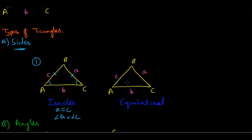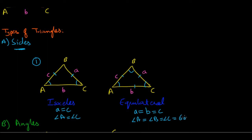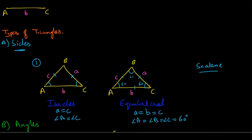Next is the equilateral triangle, where all three sides are equal: side a, side b, and side c are all equal. As a consequence, all the angles are also equal — angle A equals angle B equals angle C. Since all angles sum to 180 degrees, each angle must equal 60 degrees. There is also a scalene triangle where nothing is equal, but you don't really need to remember that.